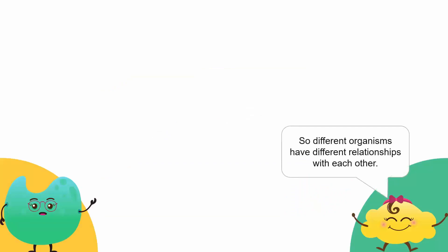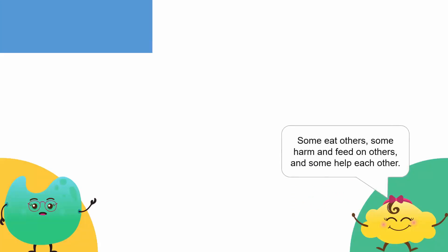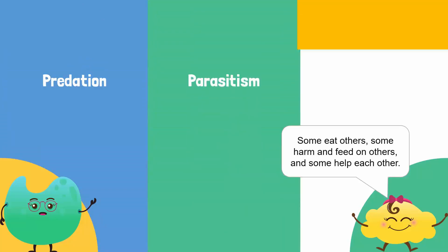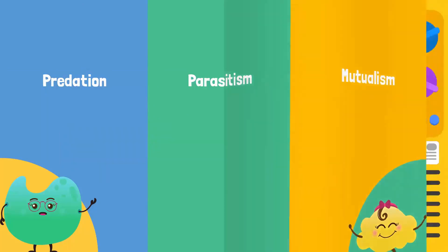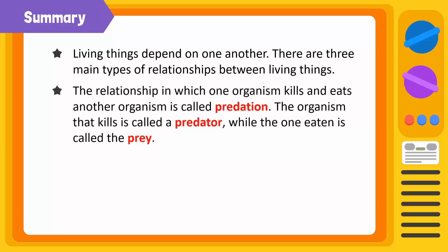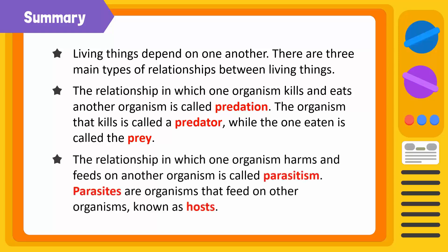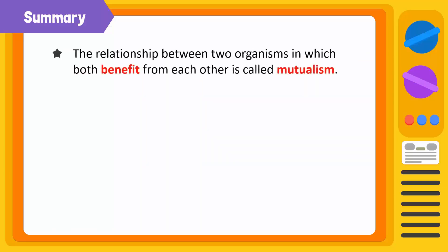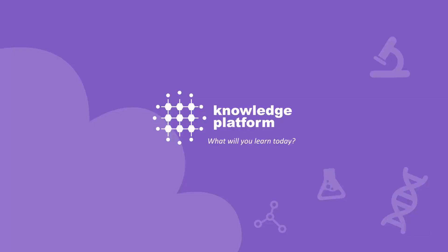So different organisms have different relationships with each other — some eat others, some harm and feed on others, and some help each other. Time to summarize. Living things depend on one another. There are three main types of relationships between living things. The relationship in which one organism kills and eats another is called predation; the organism that kills is called a predator while the one eaten is called a prey. The relationship in which one organism harms and feeds on another is called parasitism; parasites are organisms that feed on other organisms known as hosts. A relationship between two organisms in which both benefit from each other is called mutualism.